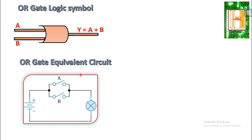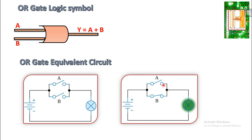Let us see the equivalent electrical circuit. In the OR gate, the two switches A and B are parallel to each other. The output lamp turns on when any one of the switches is at logic one. In the second diagram, A is open and B is closed, so the current flows through switch B, completing the circuit and turning on the lamp. From this we can conclude that if any one input of the OR gate is logic one, the output is also logic one.